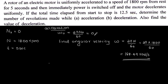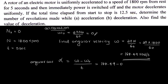The angular acceleration alpha equals (omega minus omega₀) divided by t, which is 188.49 minus 0 divided by 5, giving 37.699 radians per second squared.